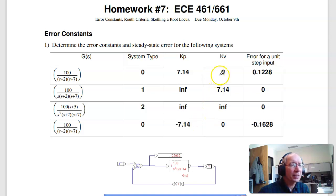Kv is the gain of s times g of s as s goes to zero. So in this case I get zero, the s's cancel I get 100 over 14, infinity, and zero.